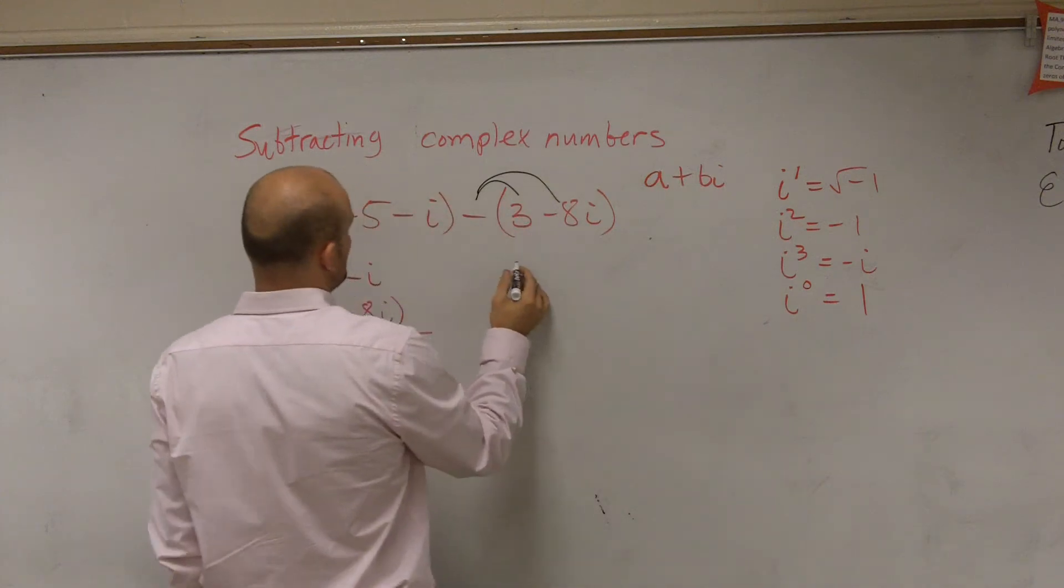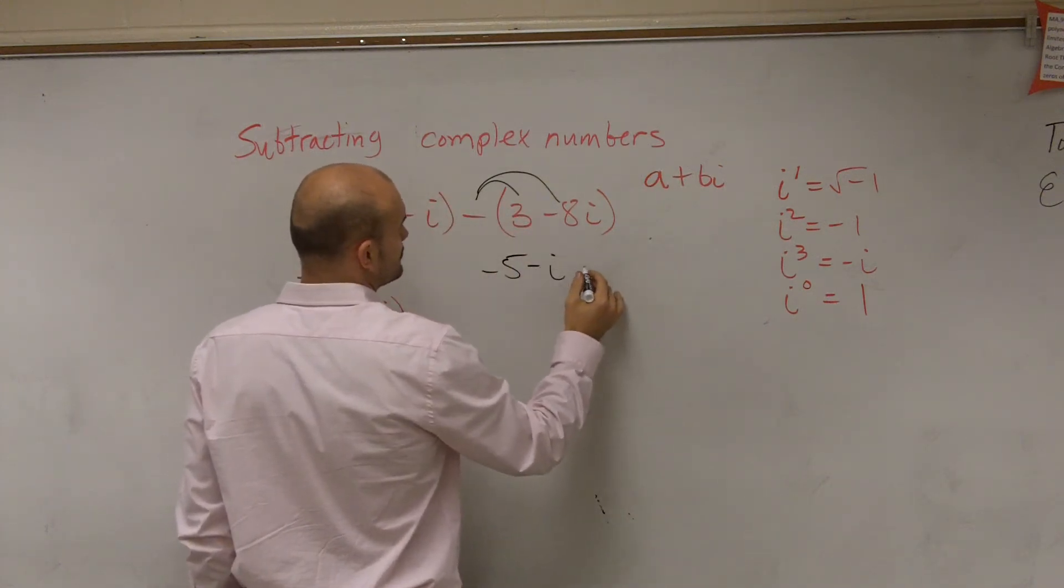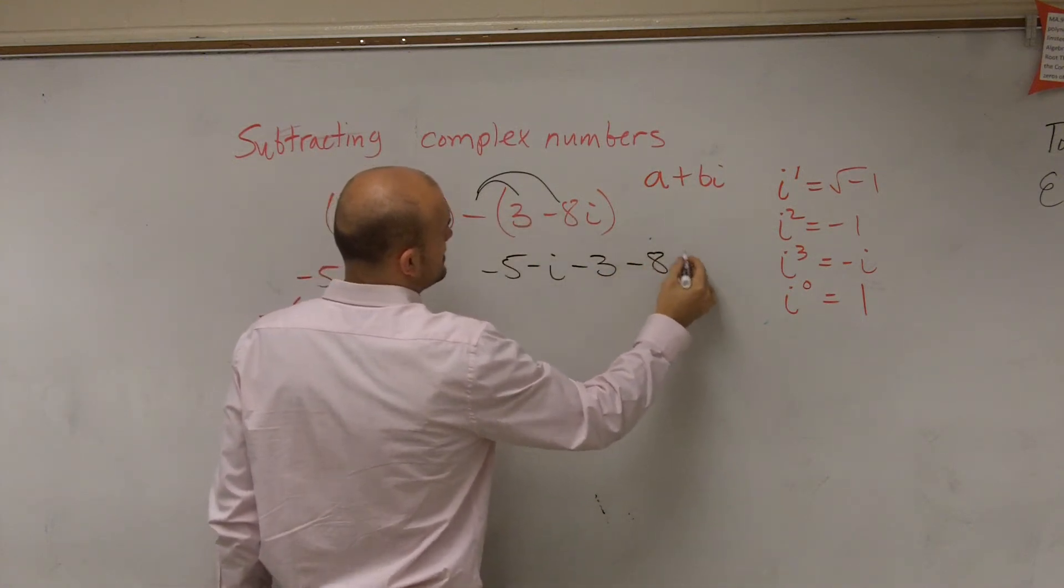Therefore, when I apply distributive property I have negative 5 minus i and then I multiply this through, so it's negative 3 minus 8i.